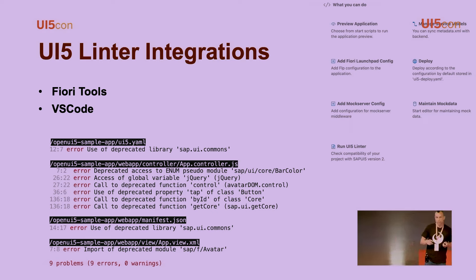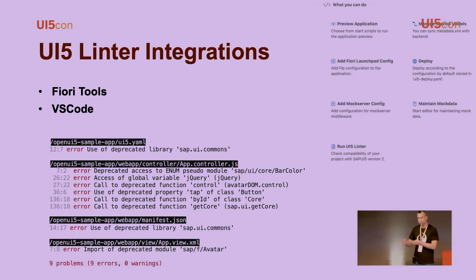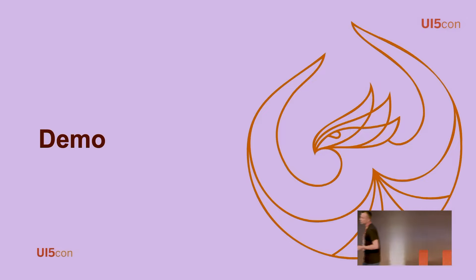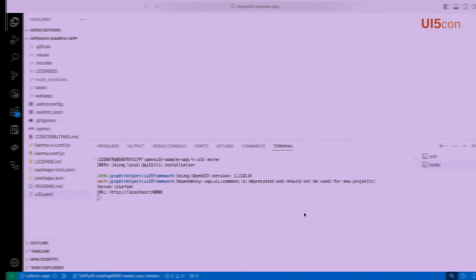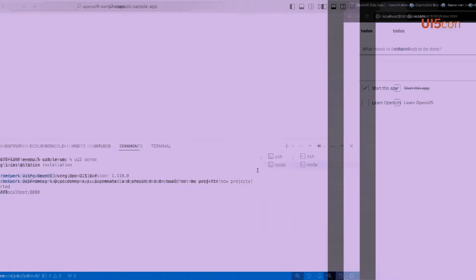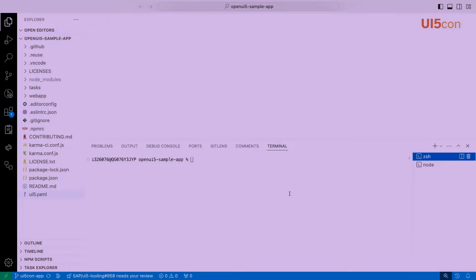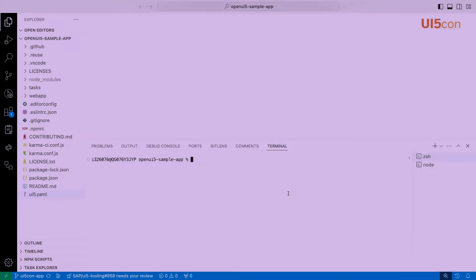The UI5 Linter is already integrated with some tools: Fiori Tools and VS Code. If you have a Fiori Elements application using Fiori Tools, just jump to the Fiori dashboard and you can run UI5 Linter and check your project. The VS Code integration enables you to click on findings and it will directly navigate you to the issue so you can easily fix it.